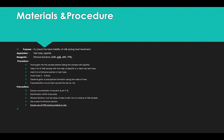For this test, a test tube and pipette is required, and ethanol solution of about 60, 65, 68, and 75 percent is required. Mix the sample before taking it. Take 2 ml of milk sample with the help of a pipette in a dry clean test tube. Add 2 ml of ethanol solution, each concentration in a separate test tube. Invert the test tube two to three times. Observe grains and precipitate formation along the walls of the tube.